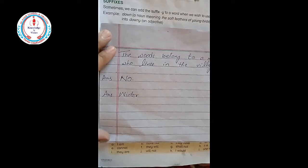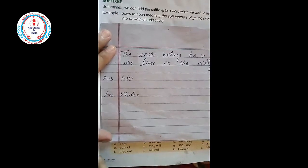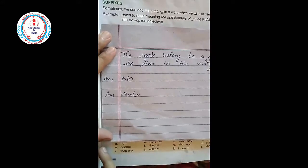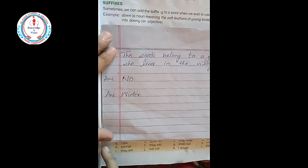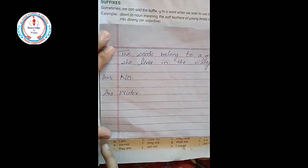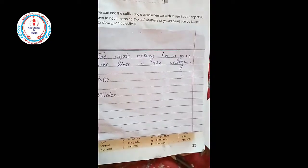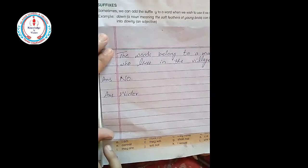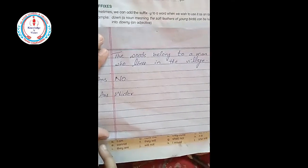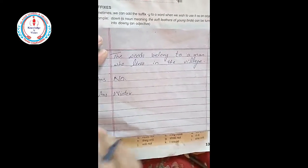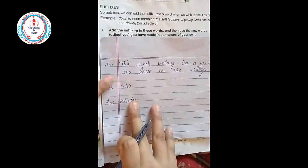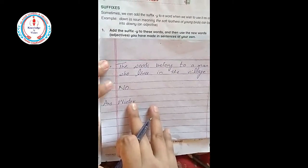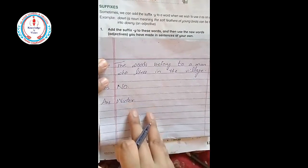Now Exercise B - working with words. First: suffixes. Sometimes we can add the suffix 'y' to a word when we wish to use it as an adjective. For example, down - meaning the soft feathers of young birds - can be turned into downy, an adjective. Question number one: add the suffix 'y' to these words and then use the new words as adjectives in sentences of your own.